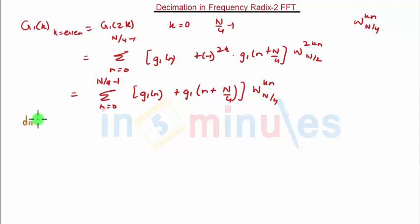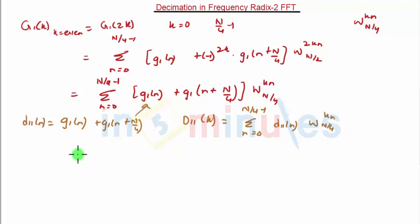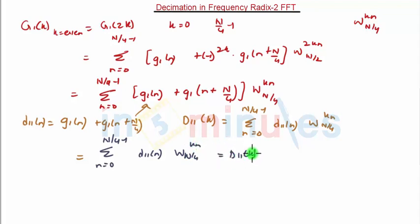We define d11(n) = g1(n) + g1(n + N/4), and d11(k) is the N/4-point DFT of d11(n). That is, d11(k) = summation n equals 0 to N/4 minus 1 of d11(n) times W_(N/4)^(kn). So substituting d11(n) into the equation, we get summation n equals 0 to N/4 minus 1 of d11(n) times W_(N/4)^(kn), which equals d11(k).